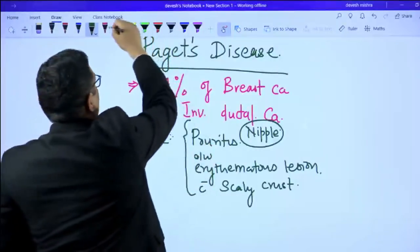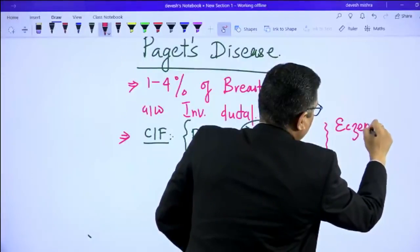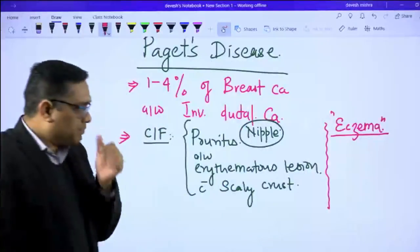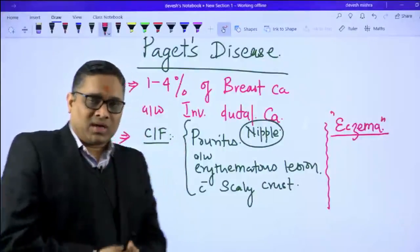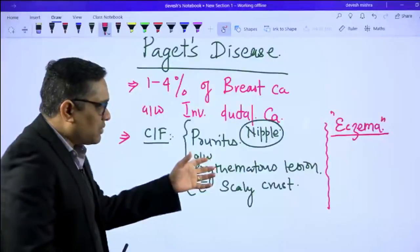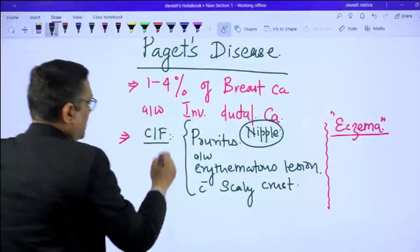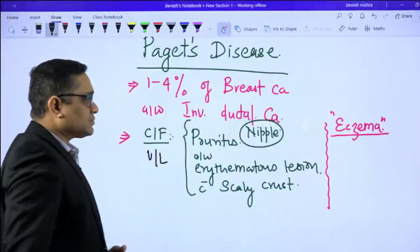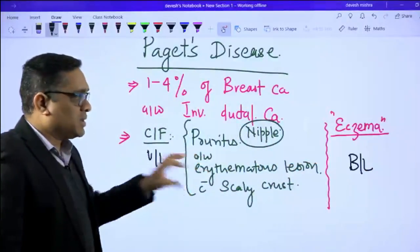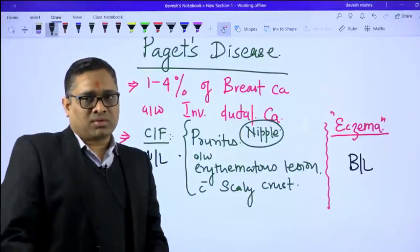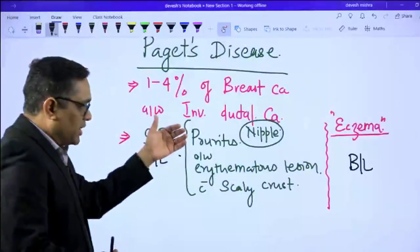This presentation mimics eczema, which is why Paget's disease is described as an eczematoid lesion — eczema-like, but not eczema. How do we discriminate? Paget's disease will be unilateral, whereas eczema will be bilateral. So clinically, unilateral pruritus with erythematous rash and scaly crust suggests Paget's disease.